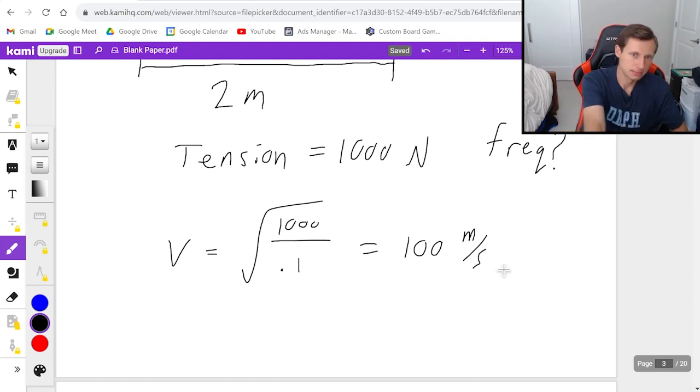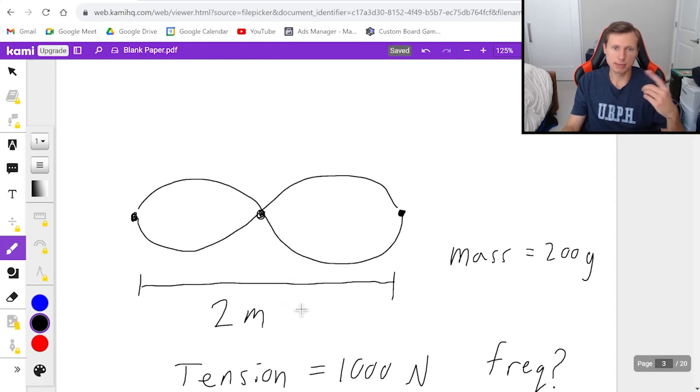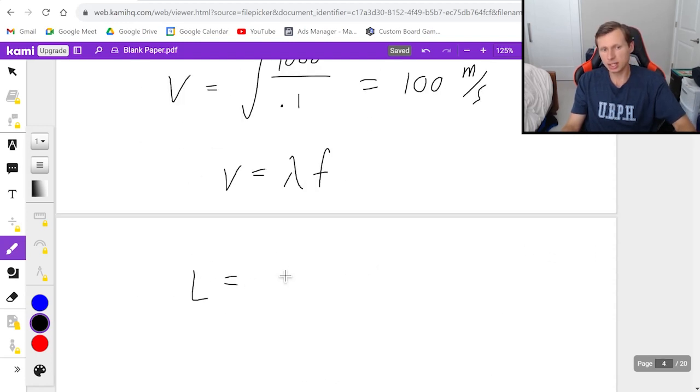And then we just have to plug it in this equation, v equals lambda times f. However, we don't know what the wavelength is yet. Of course, we can use the same equation from earlier. This time n is going to be 2 because this is the second harmonic. The reason I know that is because there are 1, 2 loops. So that means L equals n lambda over 2.